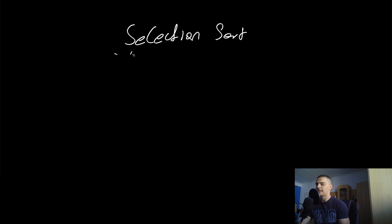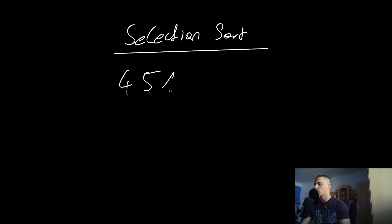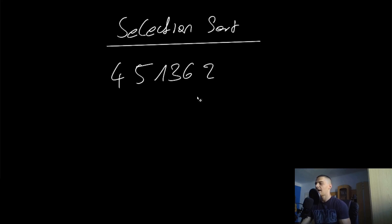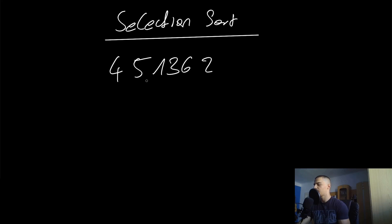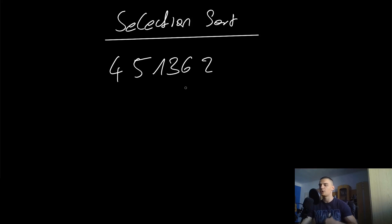Selection sort feels almost like a reverse bubble sort. In the last video we covered bubble sort — we had a list like four, five, one, three, six, two. In bubble sort, we compared two neighboring elements each time, and after one iteration we always had the maximum element placed at its correct rightmost position.